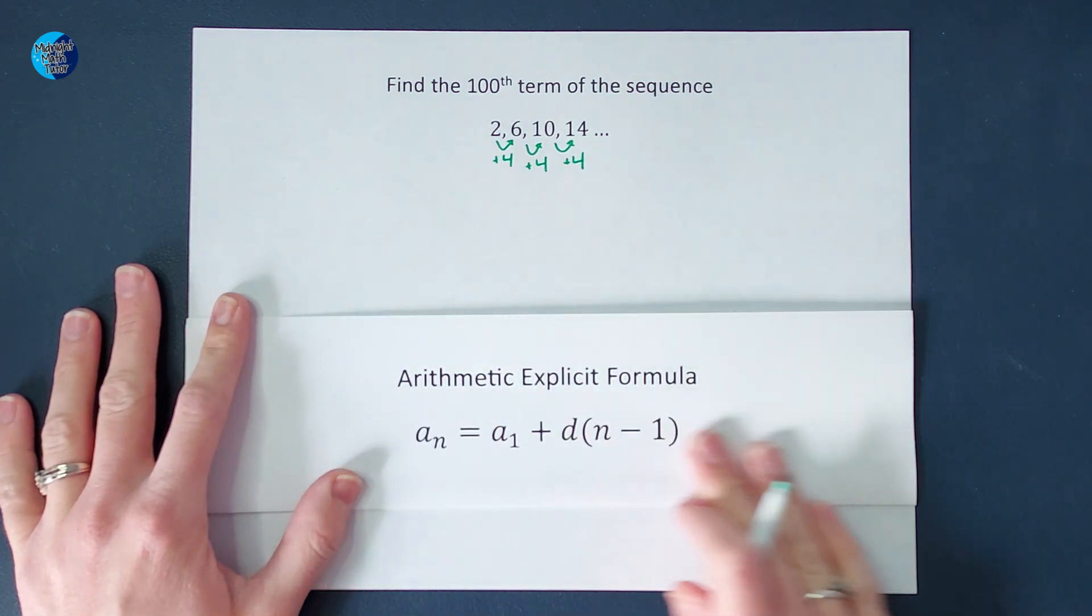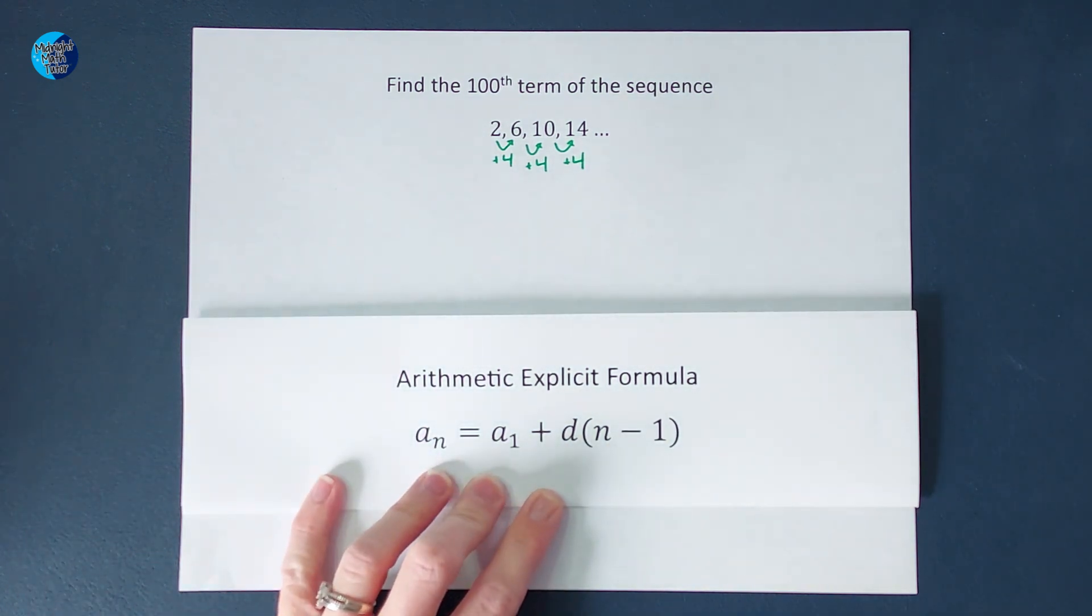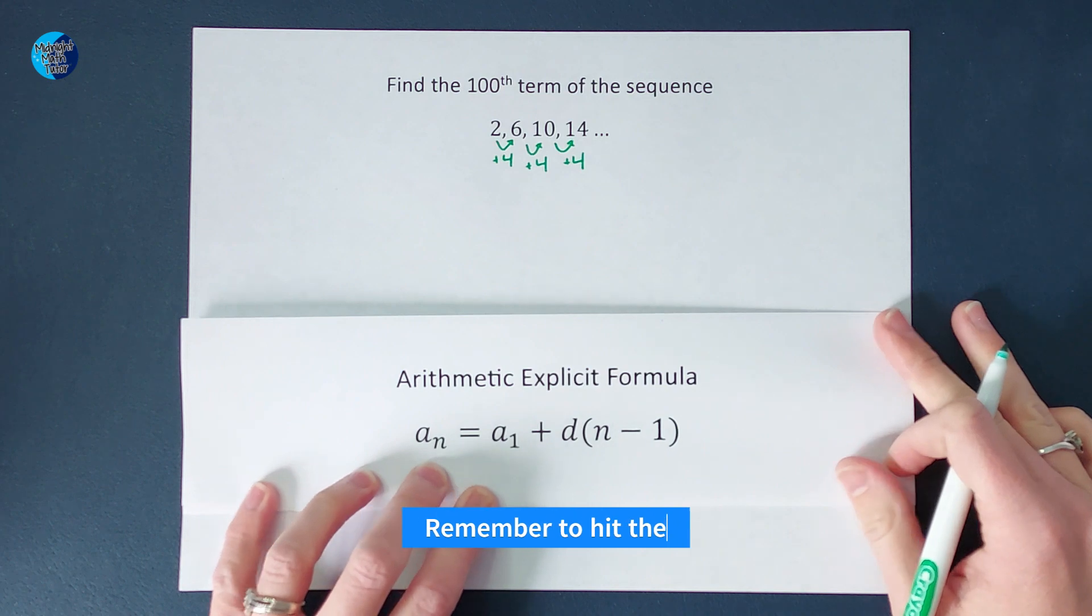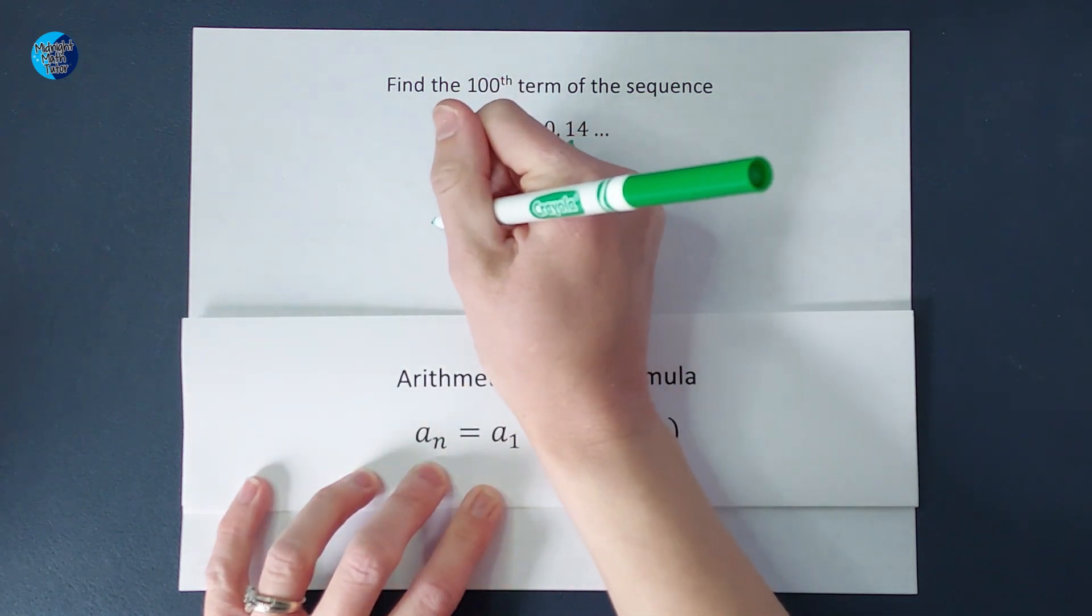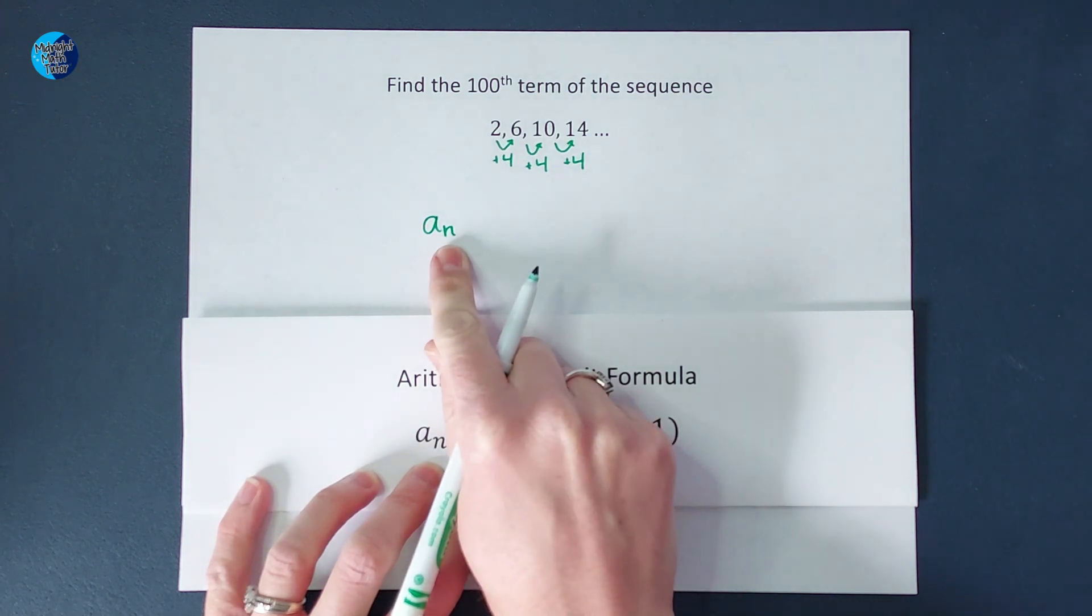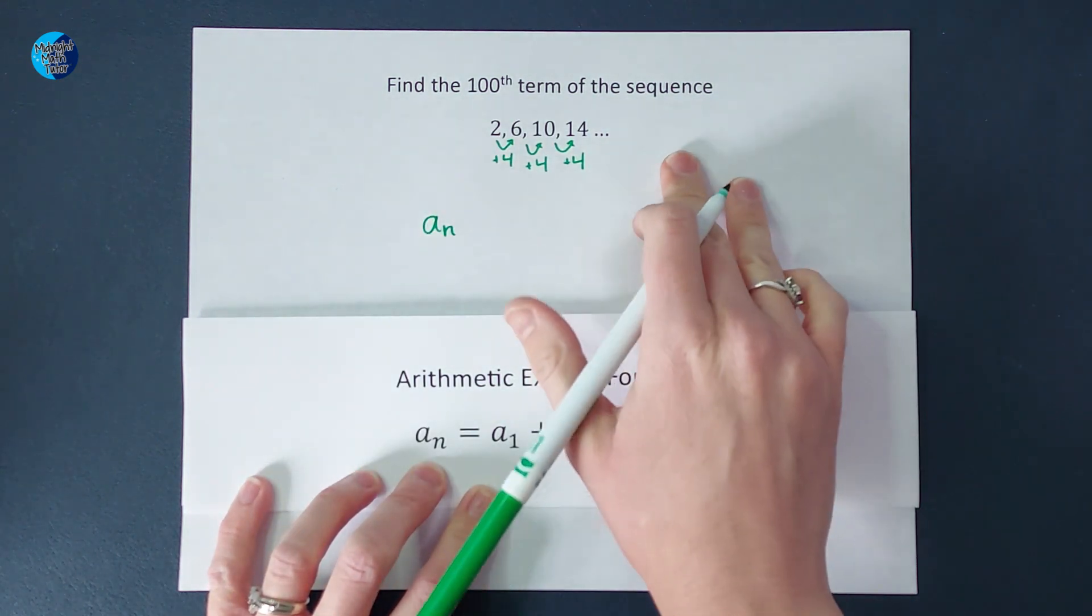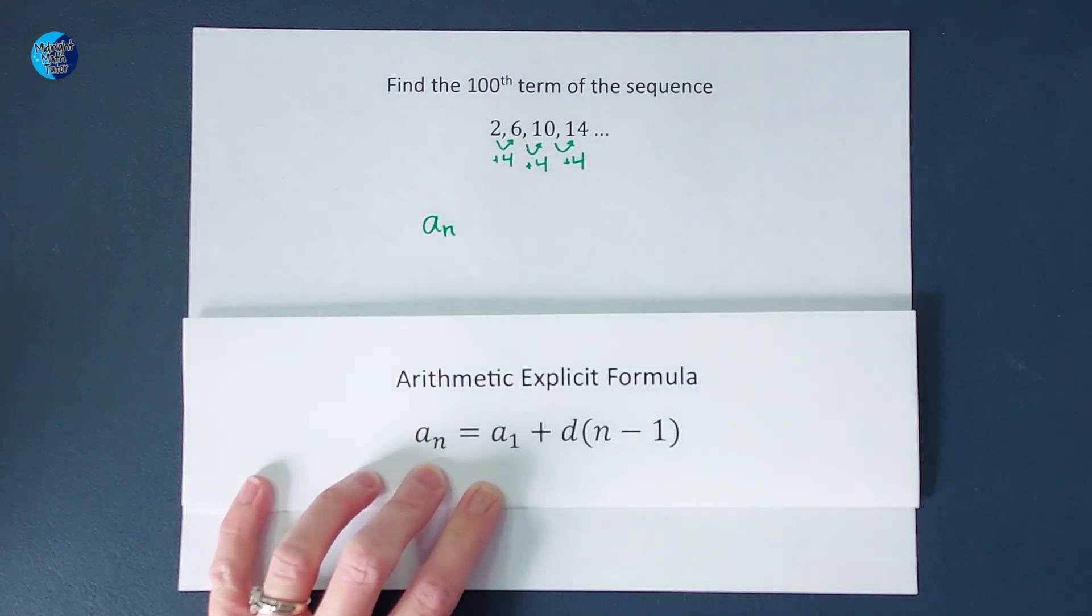So I'm going to fill this in, but we're going to talk about it as I fill it in, so we're not just memorizing it but we understand why we're doing what we're doing. Okay, so this a sub n is basically just saying whatever number you want to find. You plug in what number in this sequence you want to find. If you want to find the 15th number, plug in 15 for n.